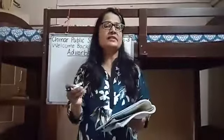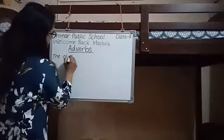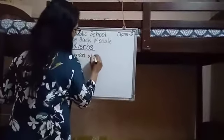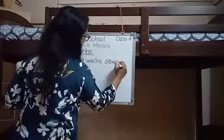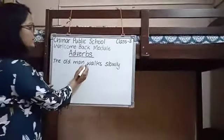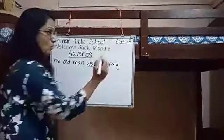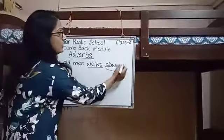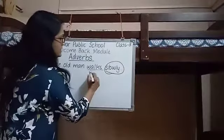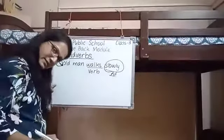Most adverbs end with '-ly'. For example, the old man walks slowly. Now here, what action is the old man doing? He is walking. How is he walking? He is walking slowly. So 'walks' is the verb and 'slowly' is the adverb.